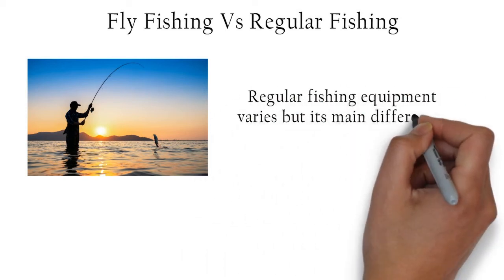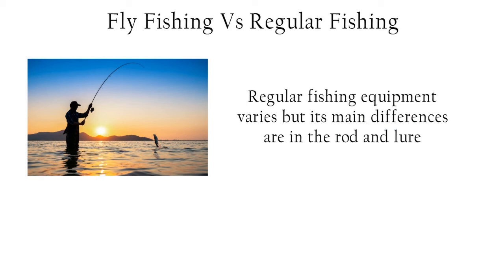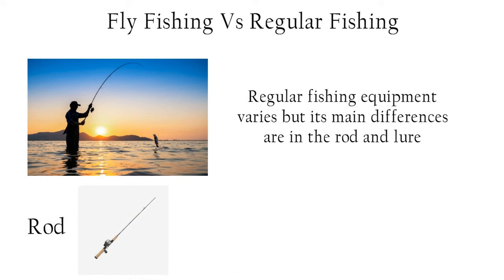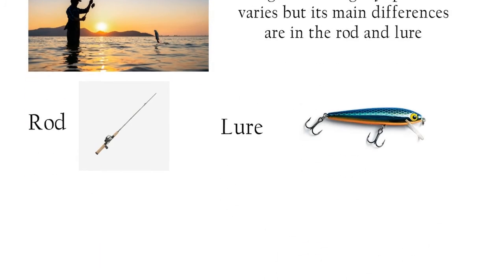Regular fishing equipment varies, but its main difference are in the rod and lure, which is a fly in fly fishing as we discussed above. The rod is generally smaller than a fly fishing rod and are stronger. This can assist you in catching larger fish. The lure is heavier than a fly and does not always look like an insect or fish. Live bait is also commonly used.